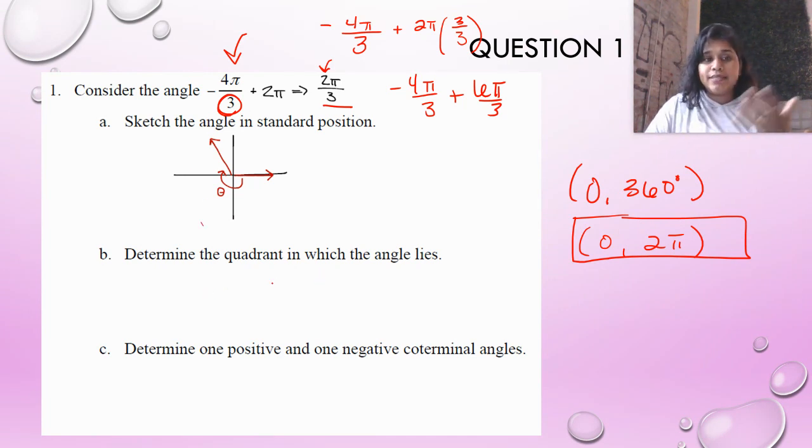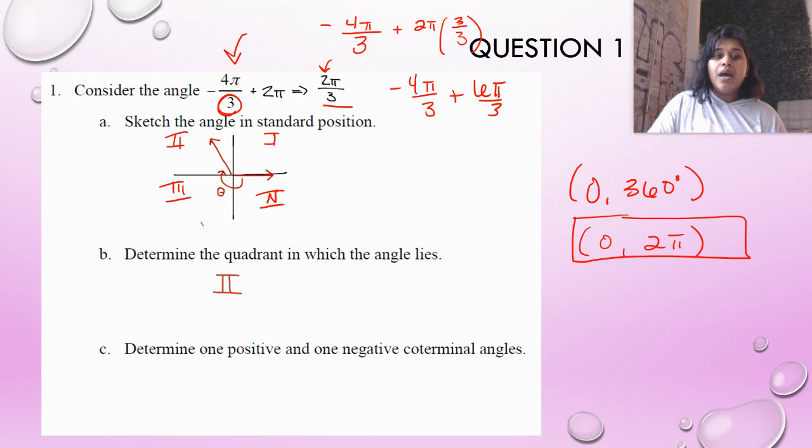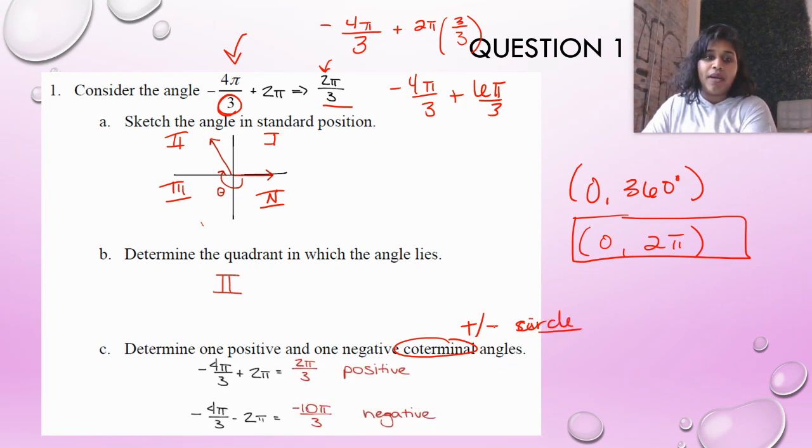determine the quadrant in which the angle lies. Boom. I know that that's quadrant 2. Just a reminder, we go in counterclockwise positioning. It goes 1, 2, 3, and 4. So we know we're in quadrant 2. A positive and negative coterminal angle. Coterminal just means add or subtract a circle. That's it. So I'm going to take negative 4π over 3, and I'm going to add 2π. That was easy because we already did that at the beginning. So we have our positive coterminal angle. I'm going to subtract by 2π, and we've got our negative coterminal. It's that simple.